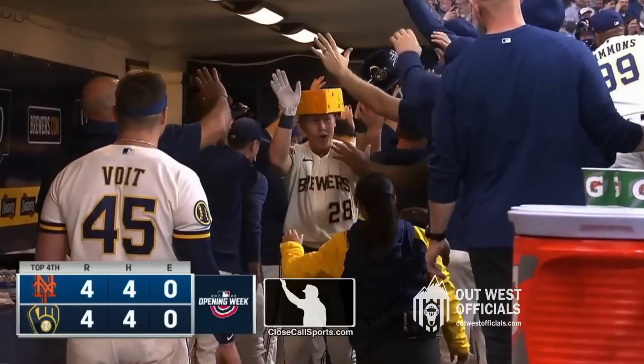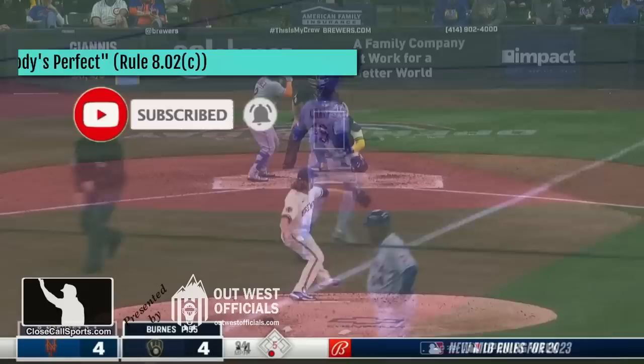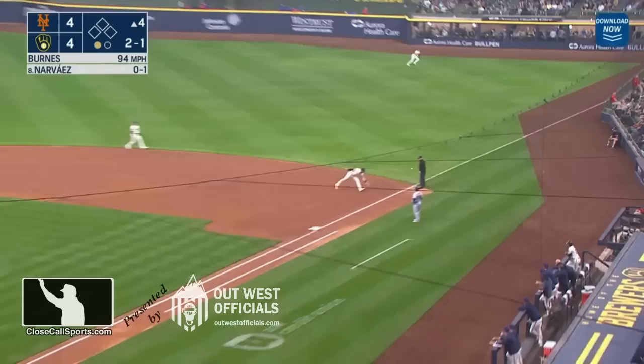Lot of fours on the board in the fourth. Welcome to an anatomy of a reversed call. We're in the fourth inning and Narvaez works himself into a 2-1 count. That's pulled past the glove of Voigt, just fouled.